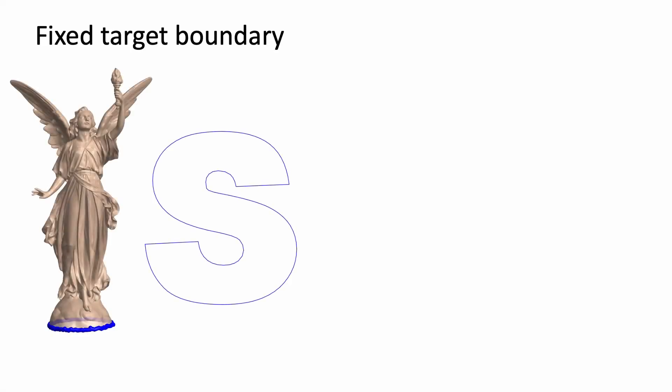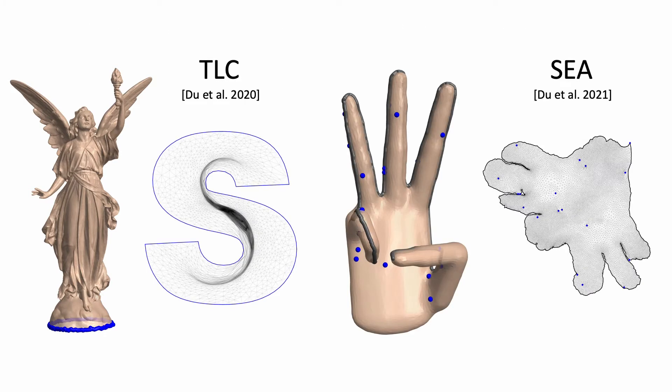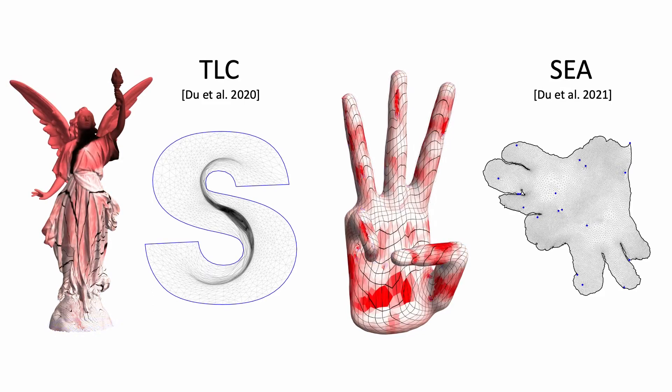Graphics applications often require mapping a triangular mesh to the plane with a fixed boundary or interior positional constraints. Existing methods can produce injective or one-to-one maps that satisfy these constraints by energy minimization, but the resulting maps often contain significant area distortions.